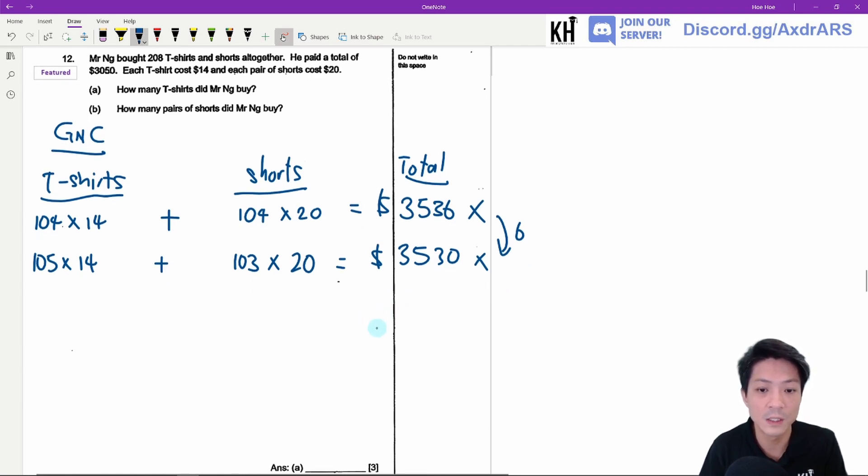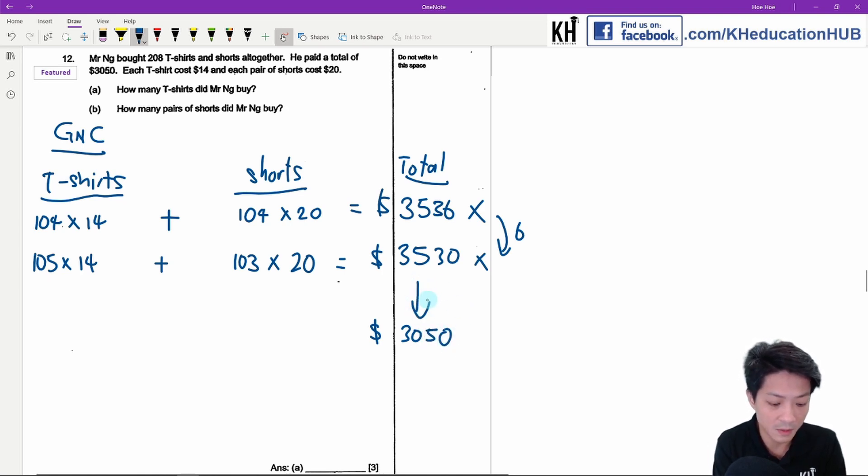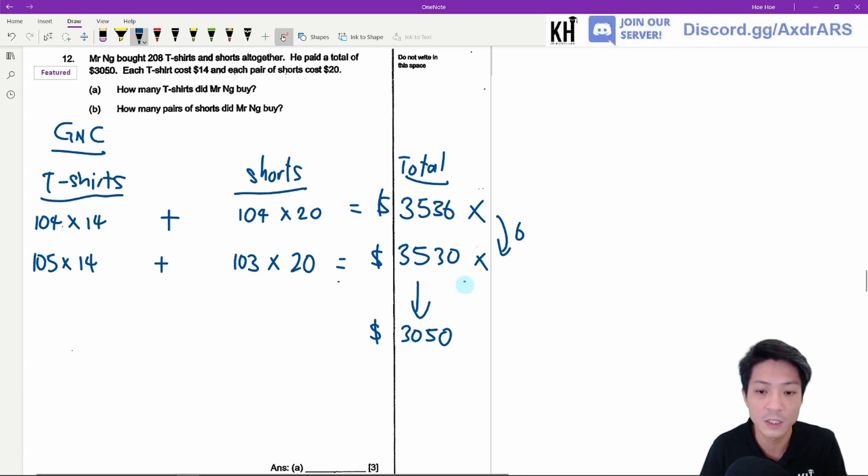So what I need to achieve is I need to reach 3050. From here to here, the total amount will be 3050, it will be $480. So if you use $480 divided by 6, you're going to find how many times you need to jump.